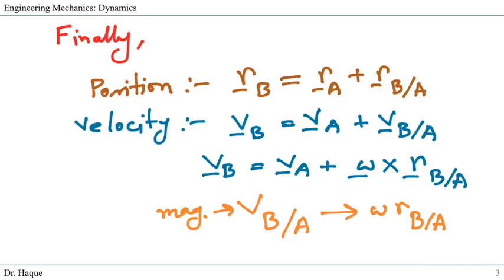Finally, in summary, let's see the equation that we have discussed today. For the position, we already know this equation from before. The position vector RB can be found from summation of position vector RA and the relative position vector RB with respect to A.